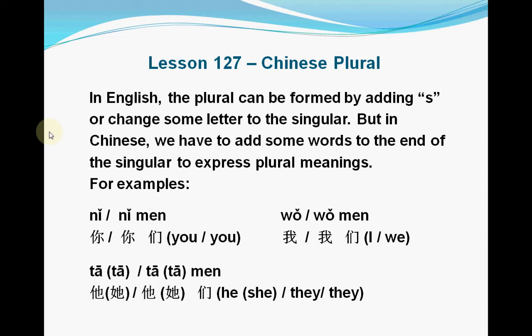For example, I think we have already talked about this in our earlier lessons. 你 (nǐ) is a singular, and 你们 (nǐmen) is the plural. But in English they are both just 'you'. 我 (wǒ) is a singular, and the plural will be 我们 (wǒmen). We add 们 (men) behind the singular to express the plural meaning.